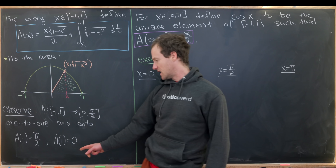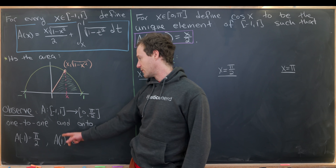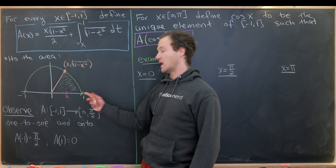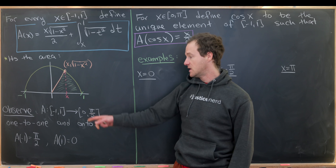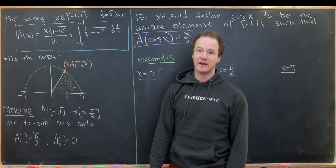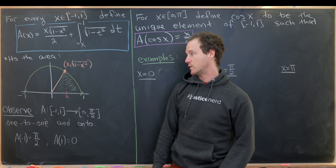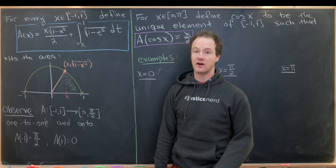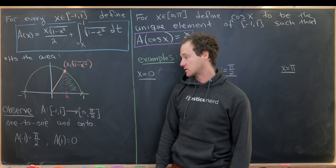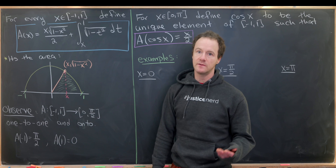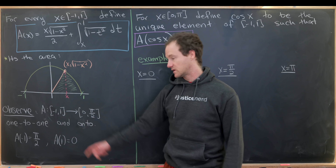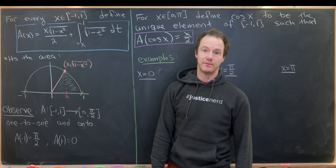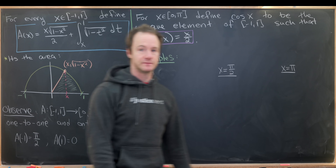That's because if we evaluate at one, we're not calculating the area of anything. But if we evaluate at negative one, we calculate the area of half of a circle of radius one, and half of a circle of radius one clearly has area pi over two.